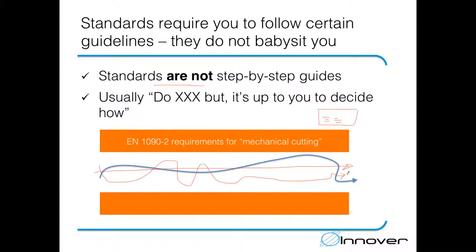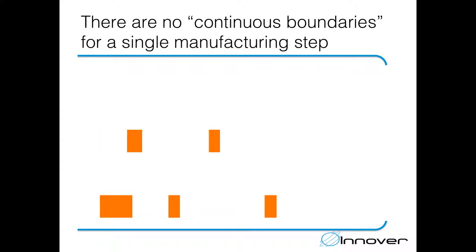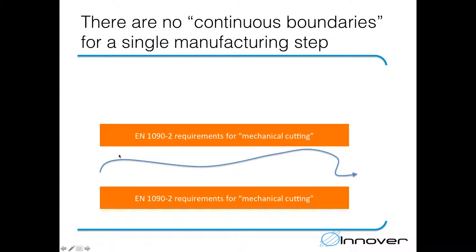Interestingly, the standards don't actually prescribe continuous boundaries for a single manufacturing step. Instead, the requirements are sporadic in nature. Even though we previously presented the requirements as continuous — covering each and every single step of the manufacturing process — that is not actually the case.